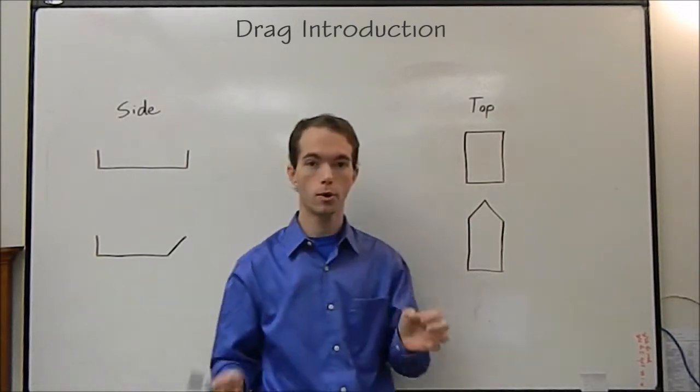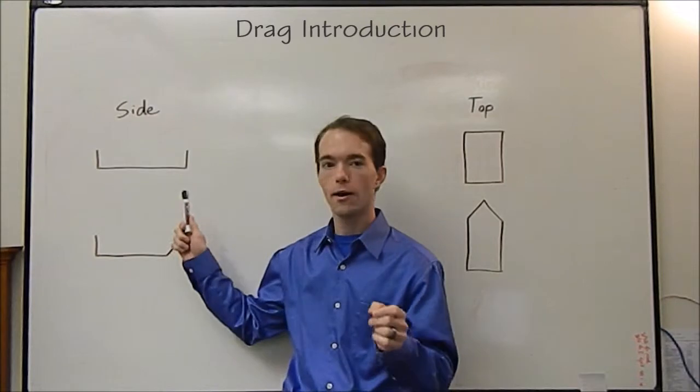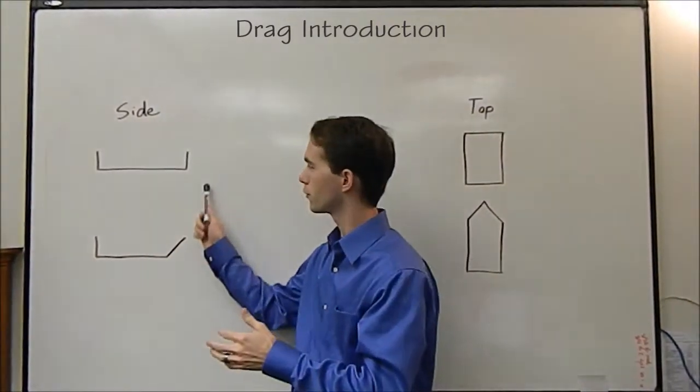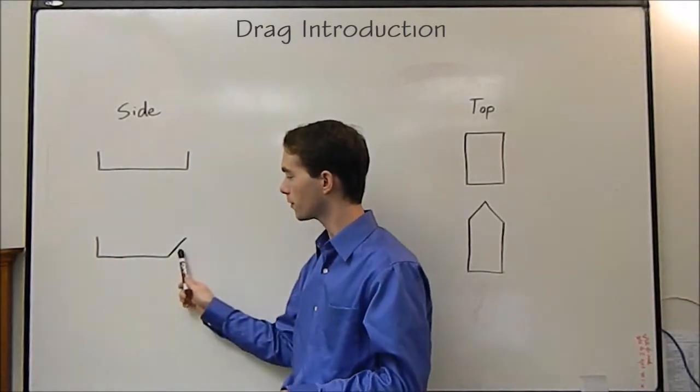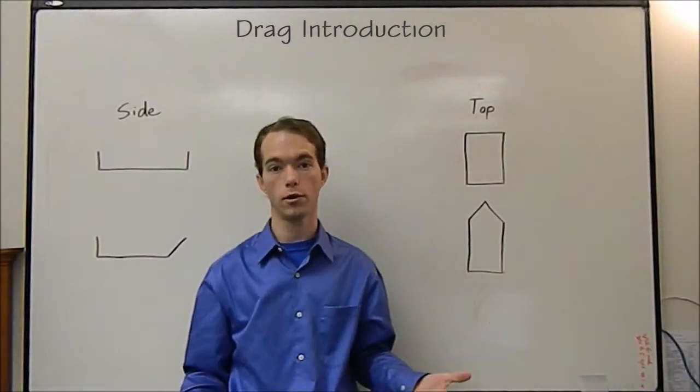So the cardboard boats that you mostly see in competition, if you look at it from the side, they're pretty much these two styles. You've got a box that somebody made float, or you've got a box that somebody decided to put a ramp on the front to help decrease drag.